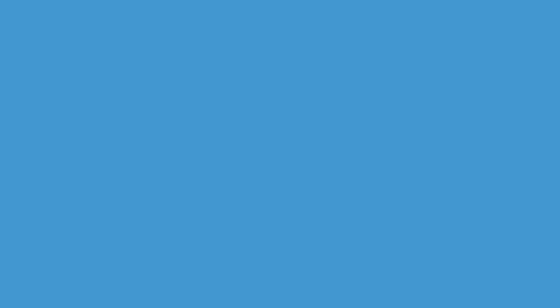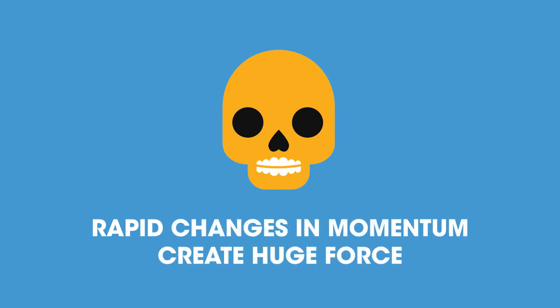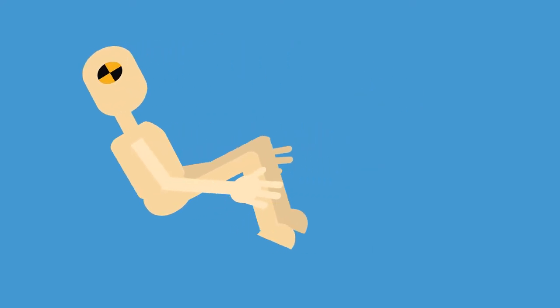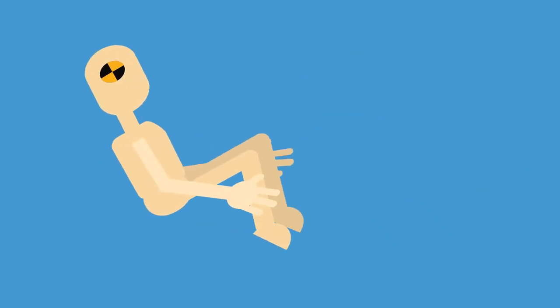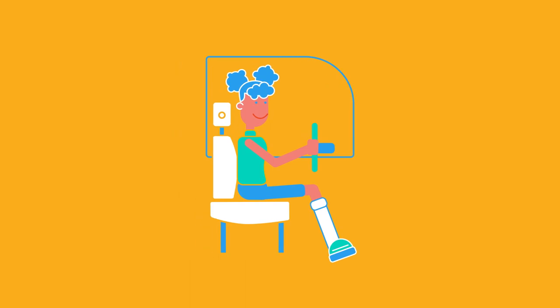That force acting on a person could be fatal. Rapid changes in momentum create huge forces that are dangerous. Car manufacturers use crash test dummies to study the forces the body is subjected to in various crash situations. We can make changes in momentum less dangerous if the change happens over a longer period of time.